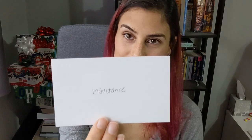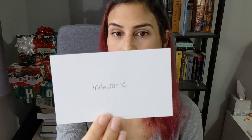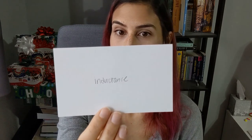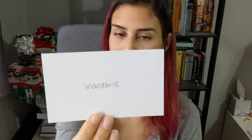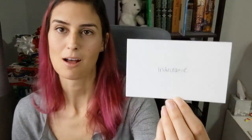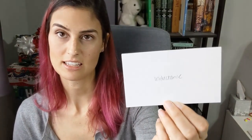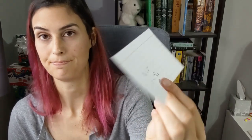Inductance: phi sub B equals L times I, where L is the inductance. Alternatively, EMF epsilon equals negative L dI/dt.